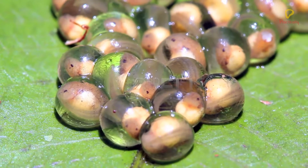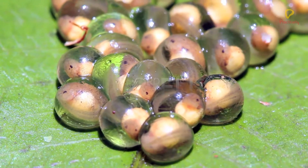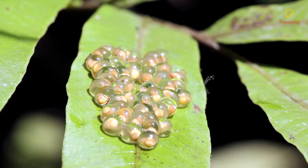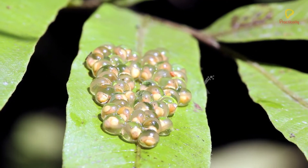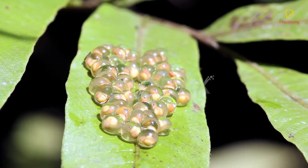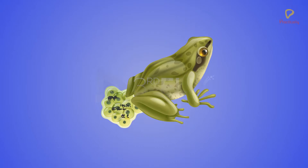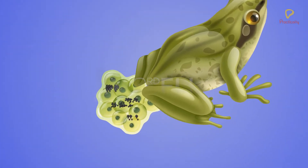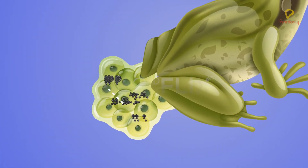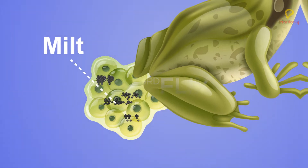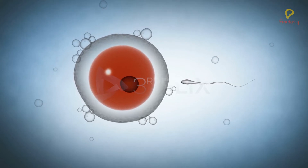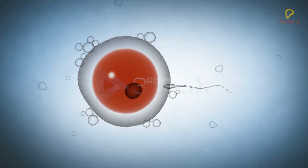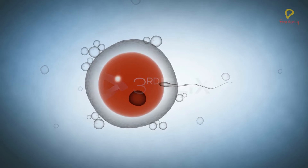These eggs are not covered by a shell and they are very delicate. All these eggs are held together by a jelly-like substance which provides protection. The male animal releases sperms over the spawn. These sperms are also called milt. The sperms fuse with the eggs, and this results in fertilization.